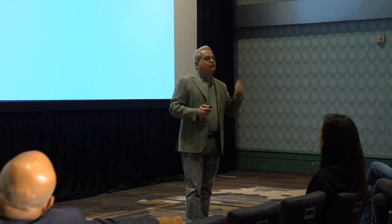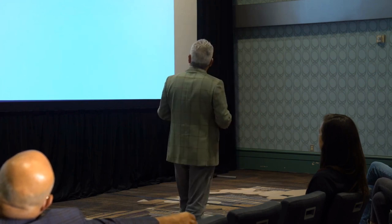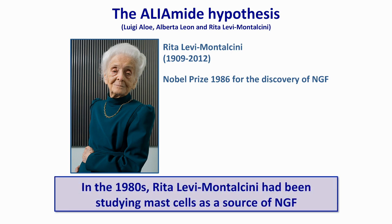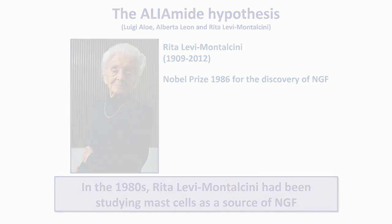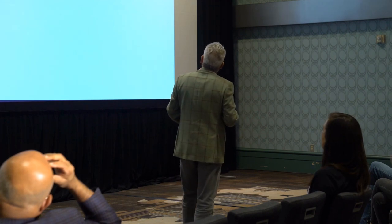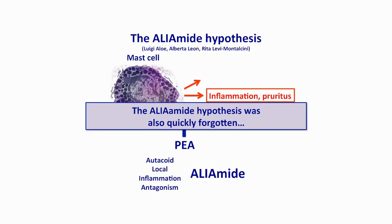The first thought as to how PEA might work came from Rita Levi-Montalcini, who received the Nobel Prize in 1986 for discovering nerve growth factor, a very important molecule in regulating the growth of sympathetic neurons. In the 1980s and early 1990s, Rita was working on mast cells — also called mastocytes — because she discovered that they make nerve growth factor, NGF. Members of her lab then came up with a possible explanation for what PEA might be doing.